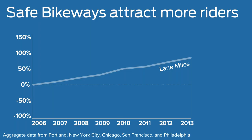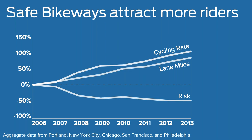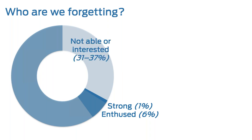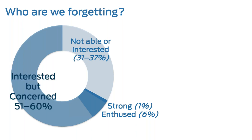Cities are making large strides in installing bike infrastructure, but often this infrastructure is placed on streets that will not attract ridership. Looking at aggregate data from six cities in the US, as they grew their infrastructure between 2006 and 2013, the rate of cycling grew even faster and the relative risk fell by half. We know that providing safe bikeways brings more people out and actually reduces risk. But this guidance raised the question of who we're forgetting. Research shows about 7% of the population is willing to ride in nominal bike infrastructure, maybe a third is not interested, and there's a huge universe of up to 60% of people who are interested but not finding their needs met by conventional bike lanes and painted infrastructure.